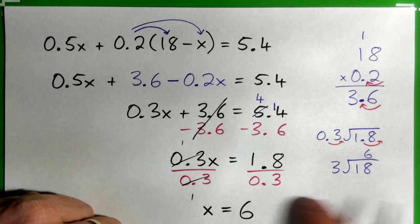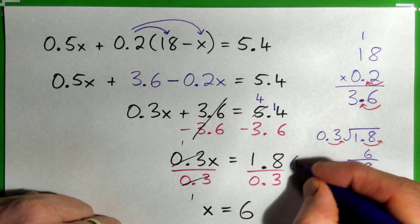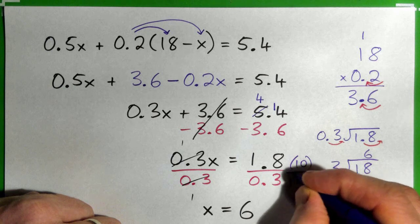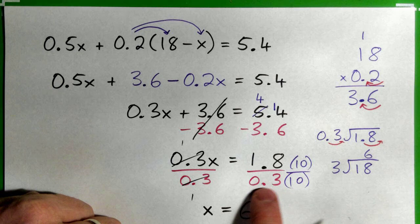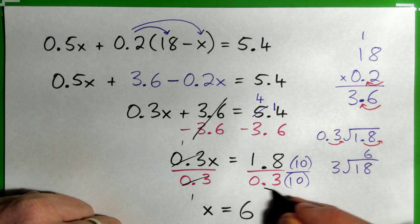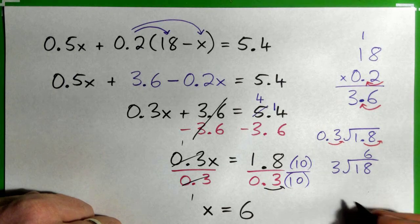Now the other way to work this out is multiply the top and bottom by 10. Why? Because if I multiply, I want the whole number on the bottom. If I multiply that by 10, that will move the decimal point to the right. 0.3 times 10 is 3, okay? So this becomes 3 on the bottom.